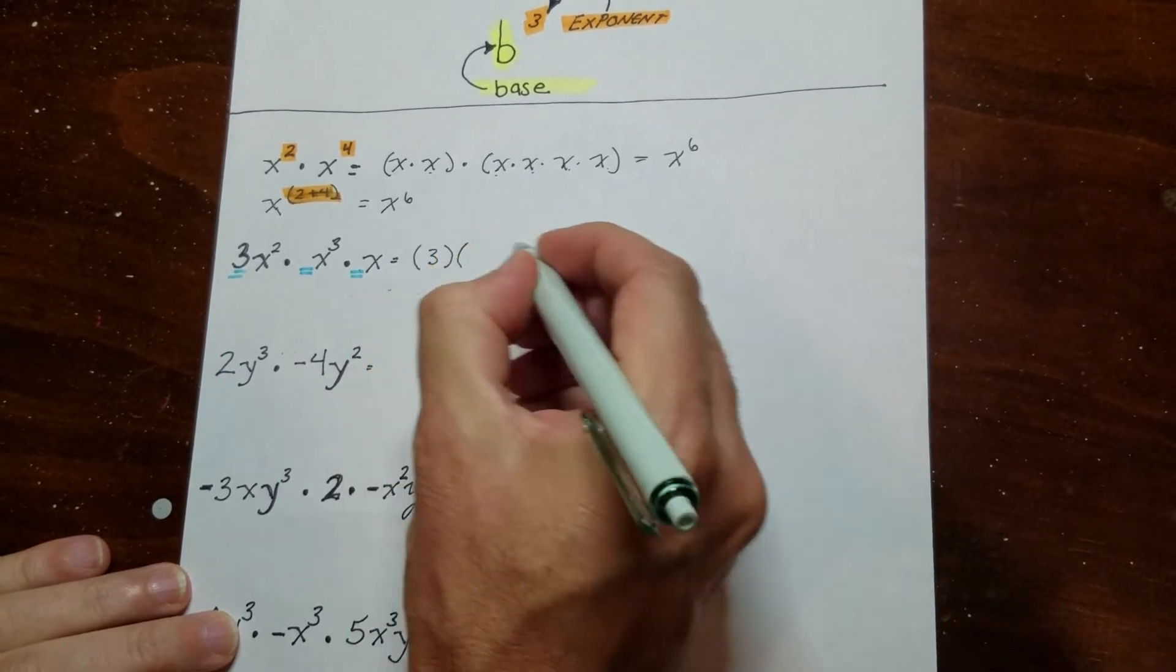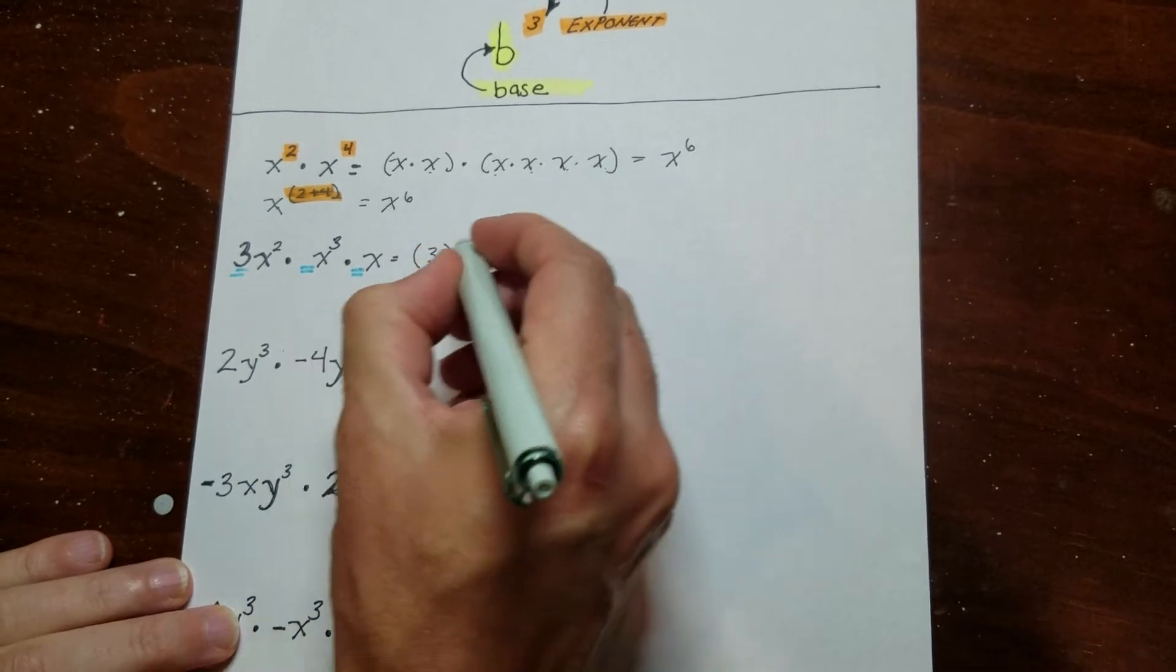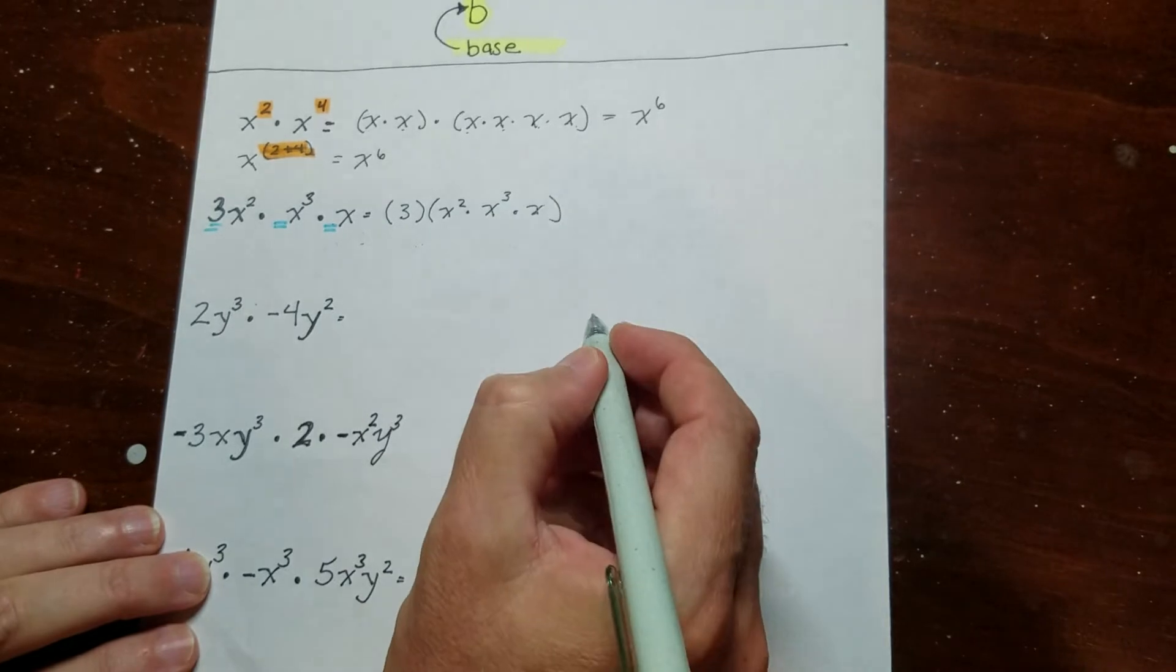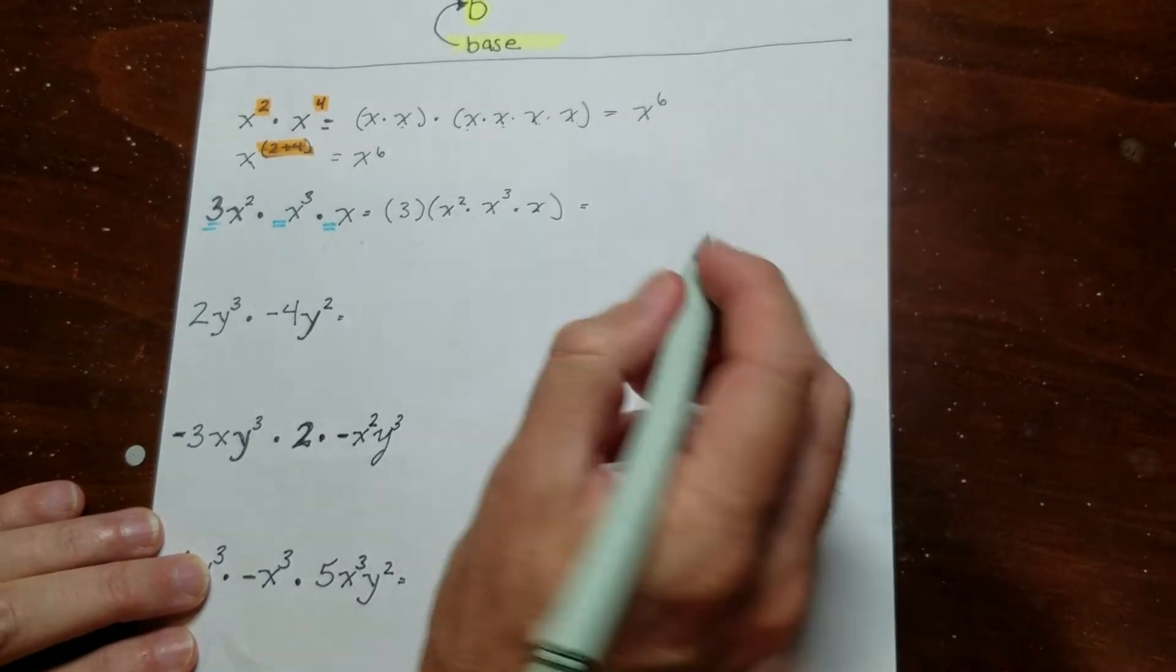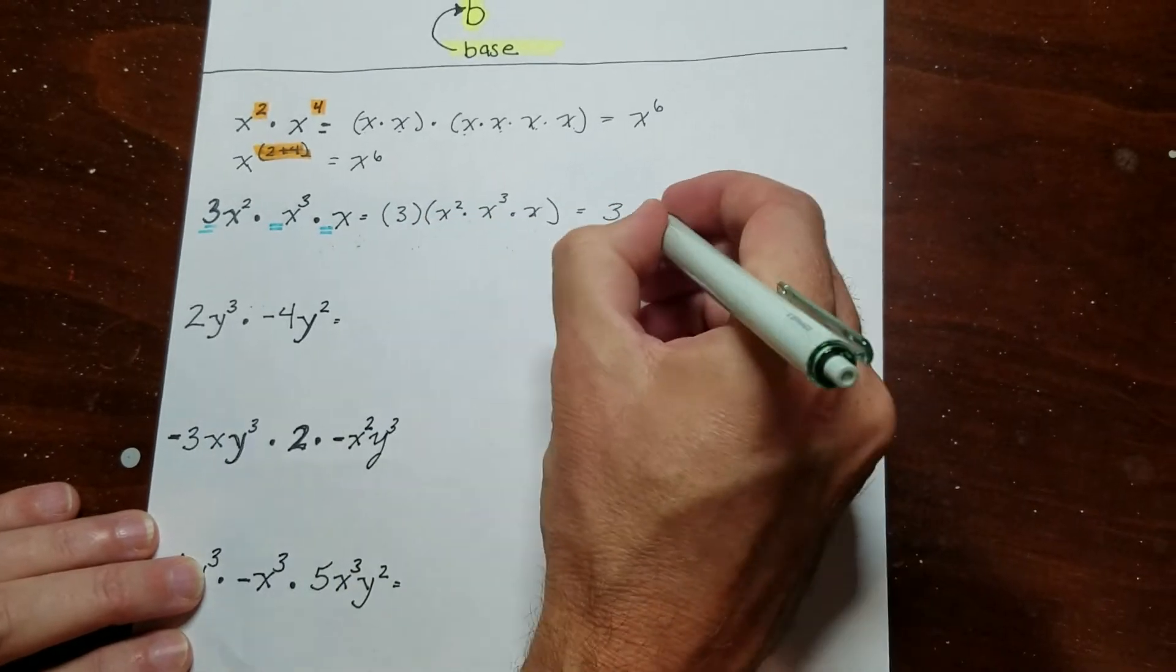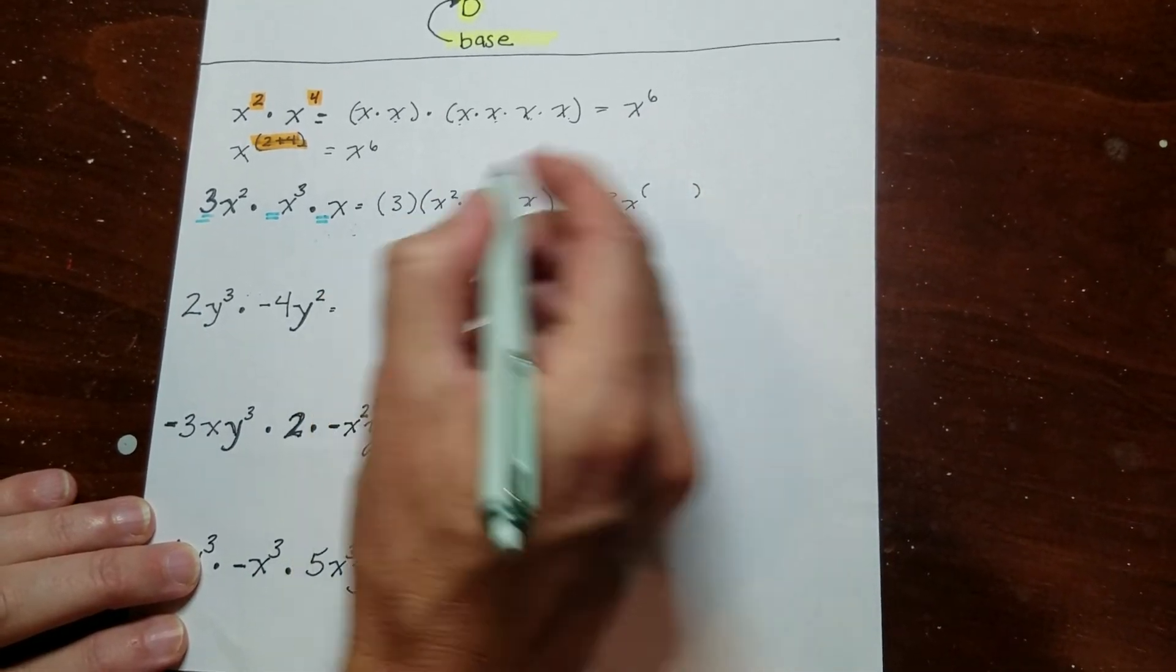And then what I'm going to do is I'm going to take these x's over here. So there's this one times this one times this one. So I've kind of organized it. And then now I have 3 and then x. These are all the same base. And what I'm going to do is put it up like this.